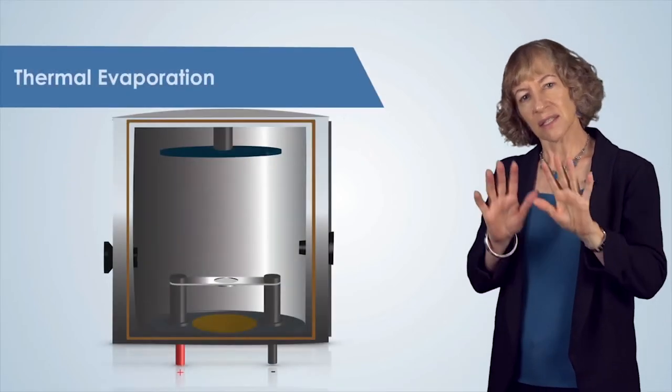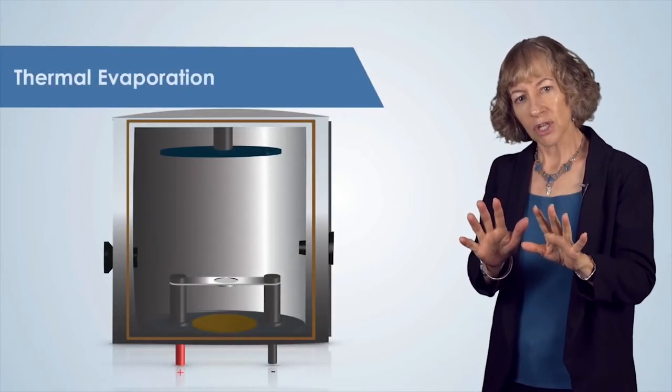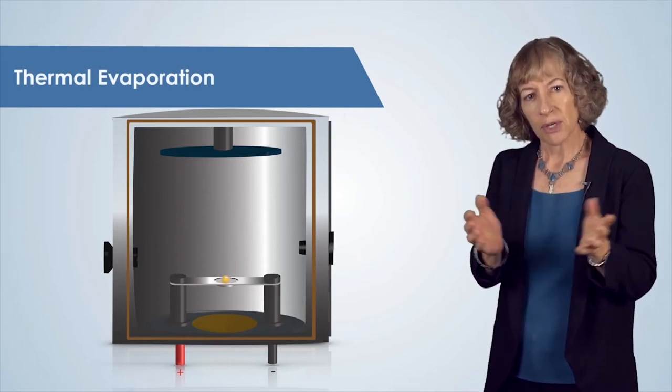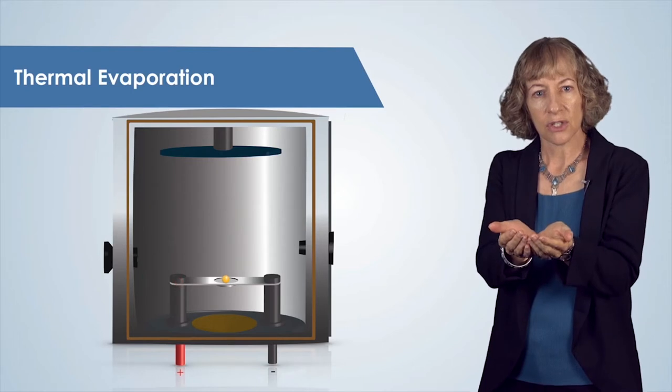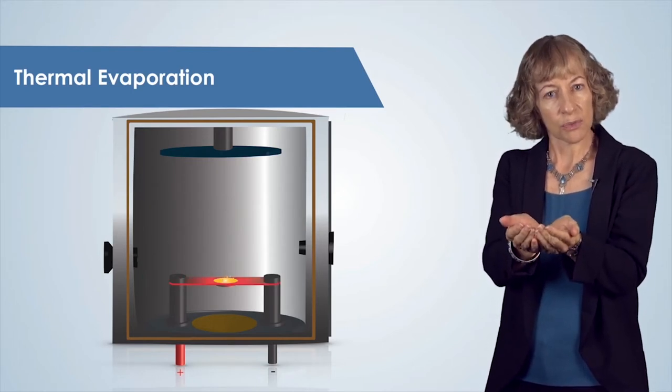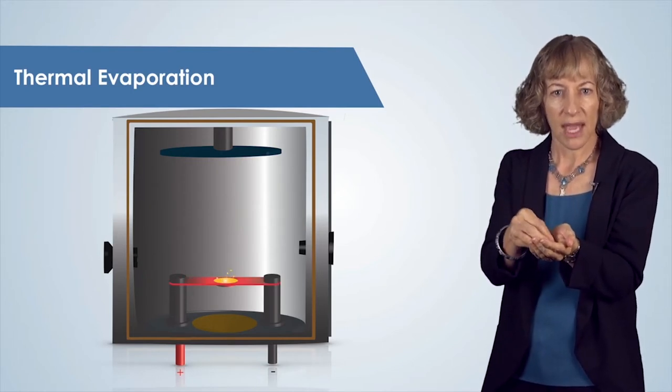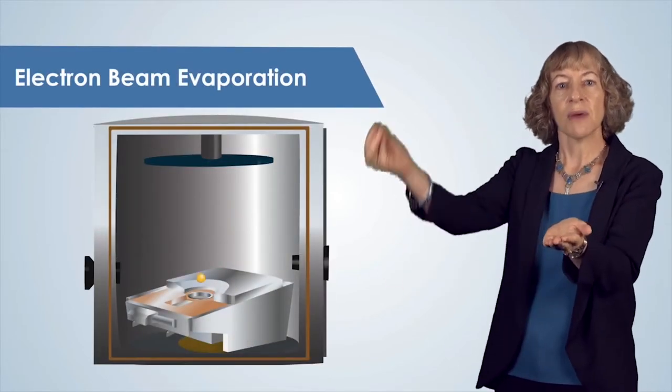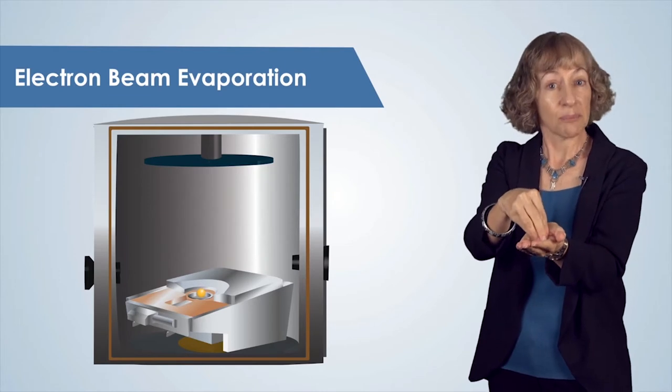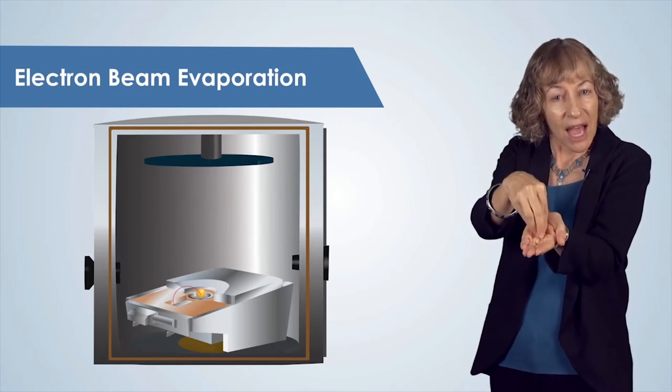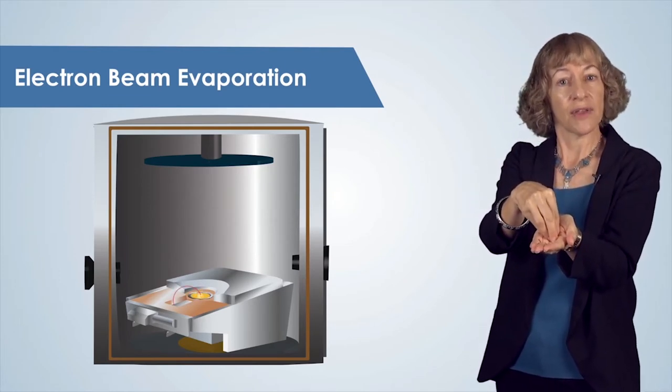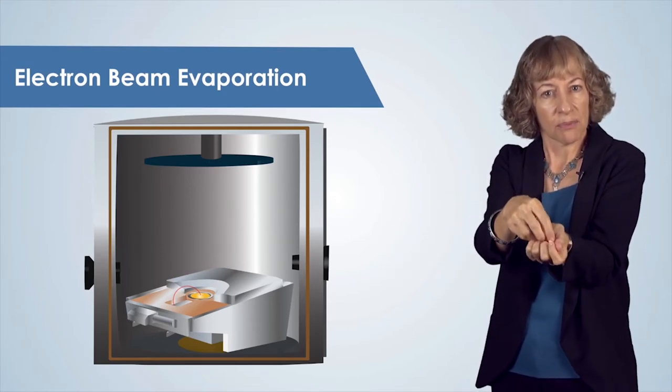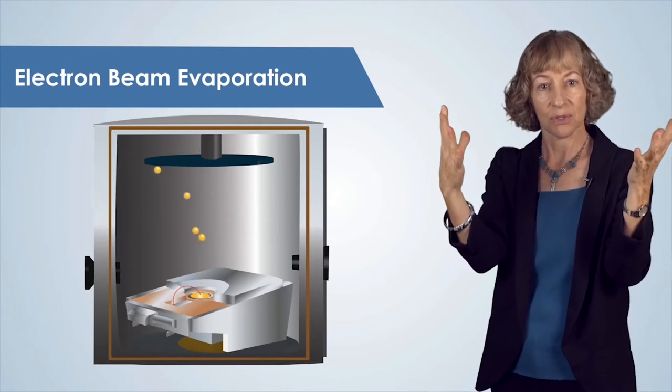This technique is similar to thermal evaporation, but the material is heated up a little bit differently. In thermal evaporation, electrical current is used to heat a boat so that the source material in the boat melts and evaporates. In electron beam evaporation, a stream of electrons, or an electron beam, is aimed at the high purity source material that we want to evaporate. This beam of electrons heats the material to its melting point and then evaporates the source material.